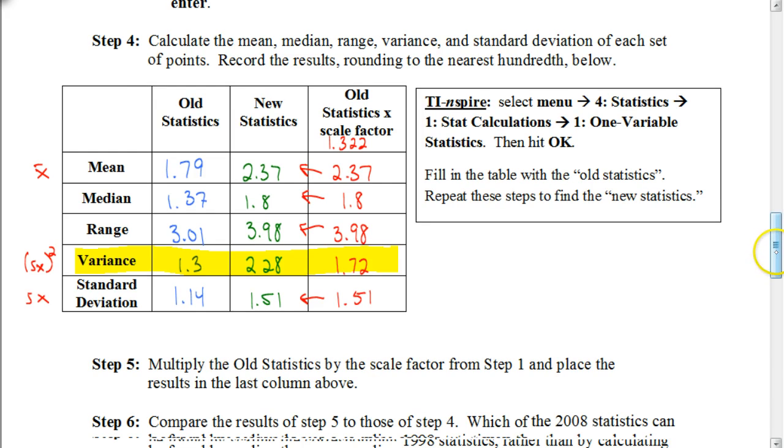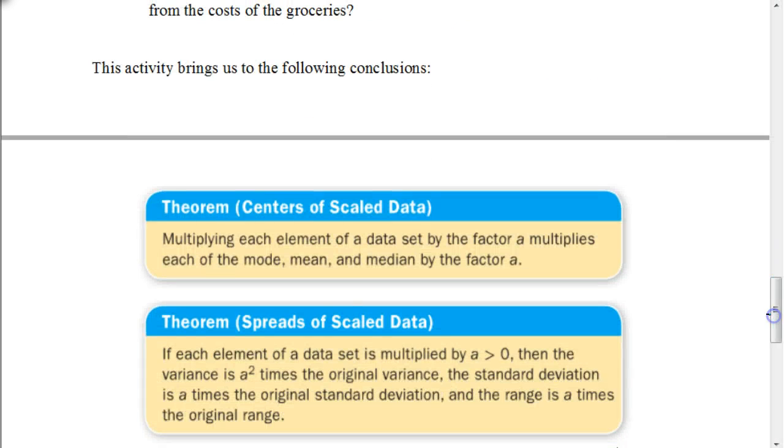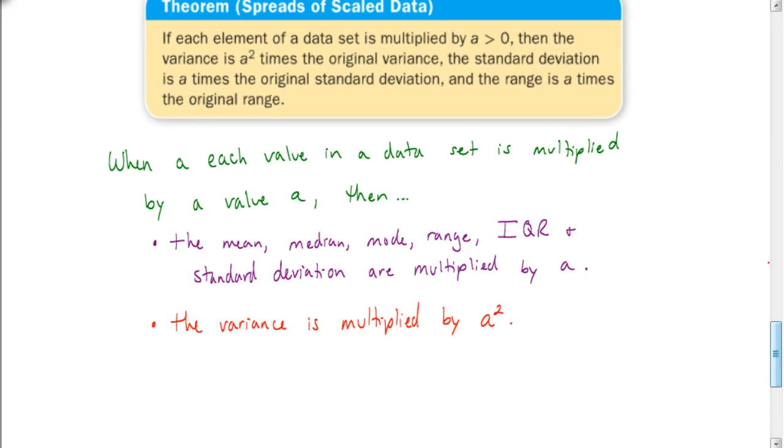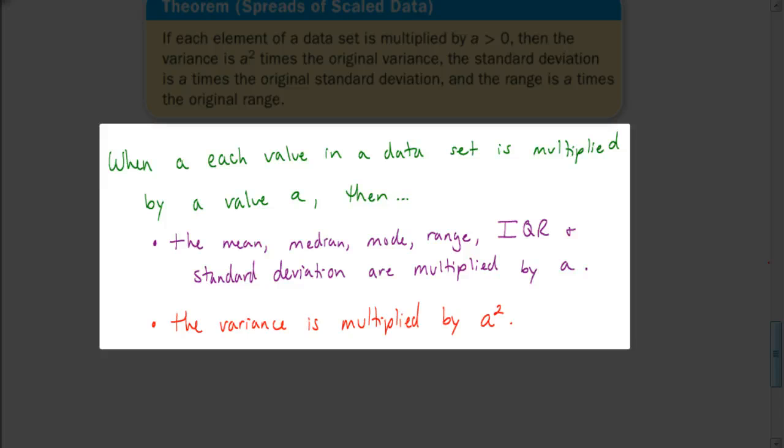This is going to be summarized. If you want to copy down what's in this box, you can. Otherwise, this would be a better way to summarize it. Again, like I just said, when each value in a data set is multiplied by a value, a, then these things are true. The mean, the median, the mode, the range, interquartile range, and standard deviation are all multiplied by a.